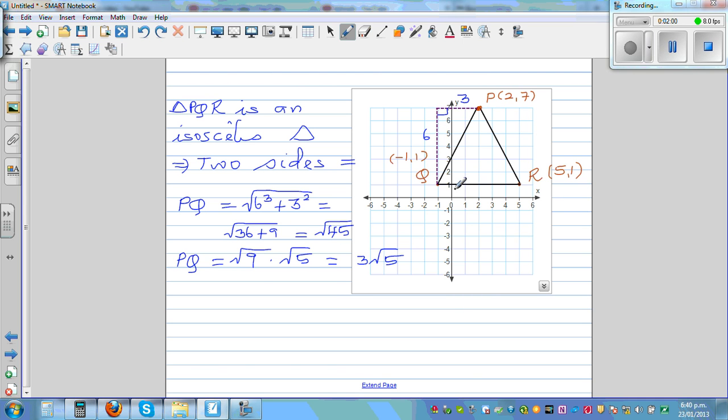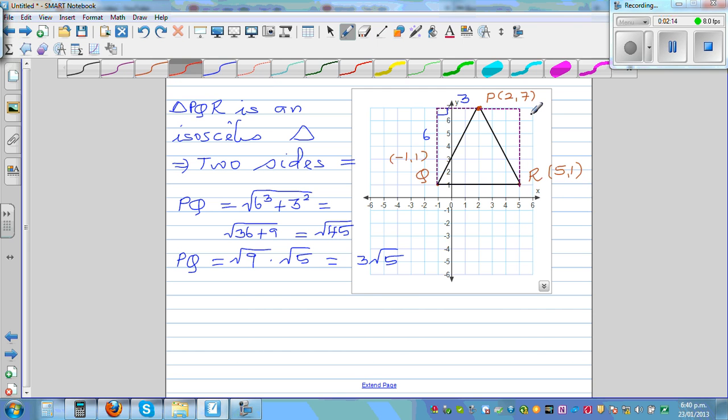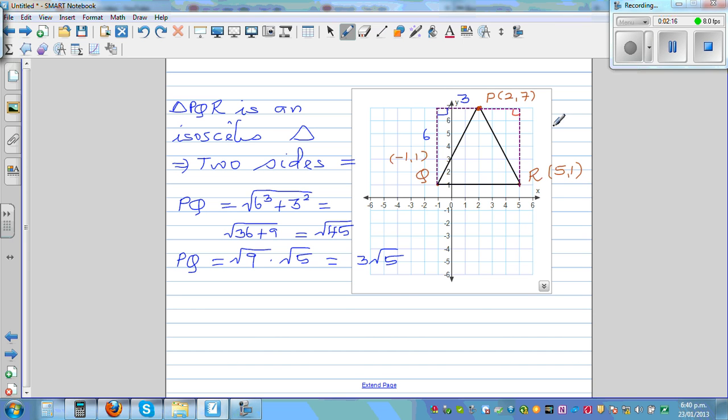What is PR? Again, let's draw a right-angle triangle joining these two points. Same principle here, same idea. This distance from this point to this point is 3, and this distance is 6.